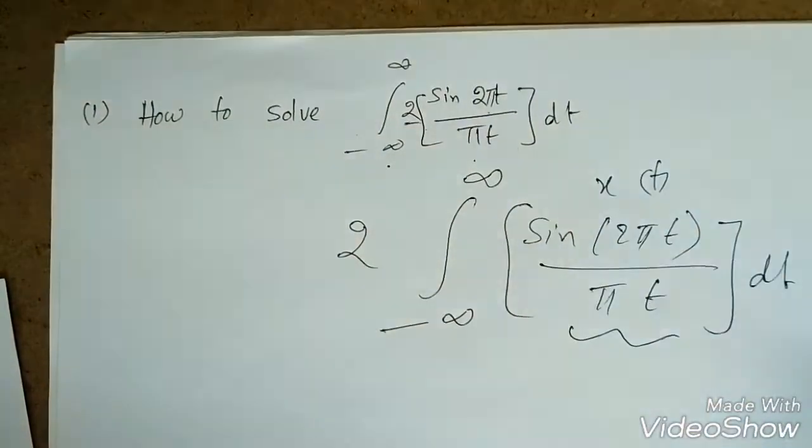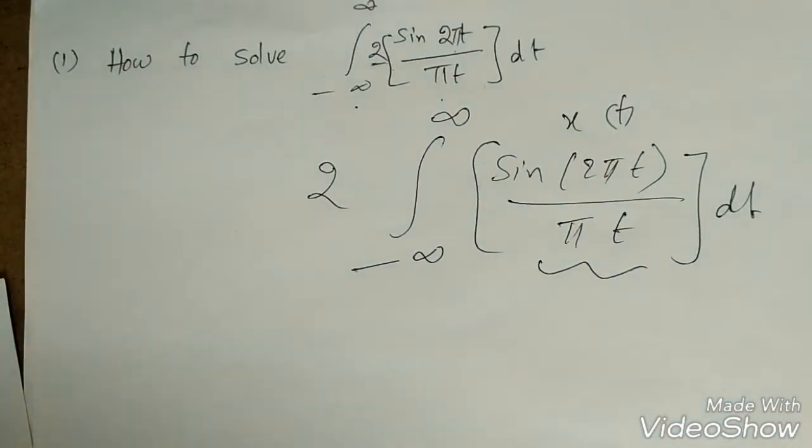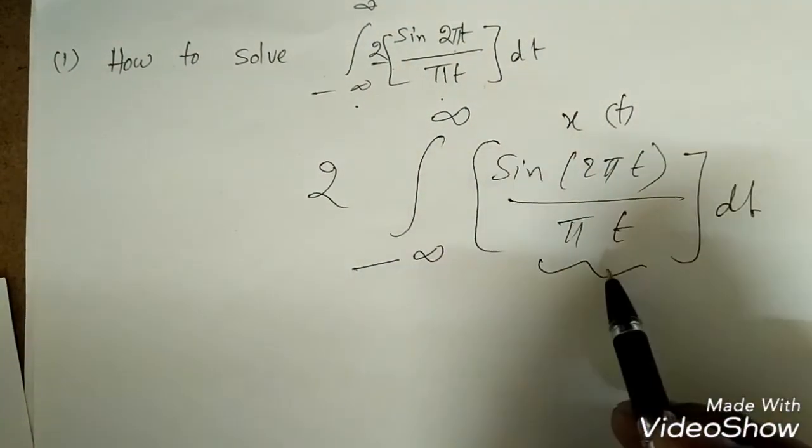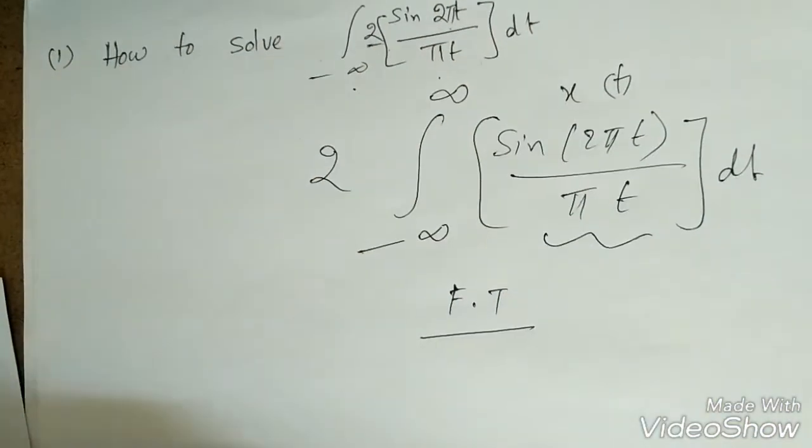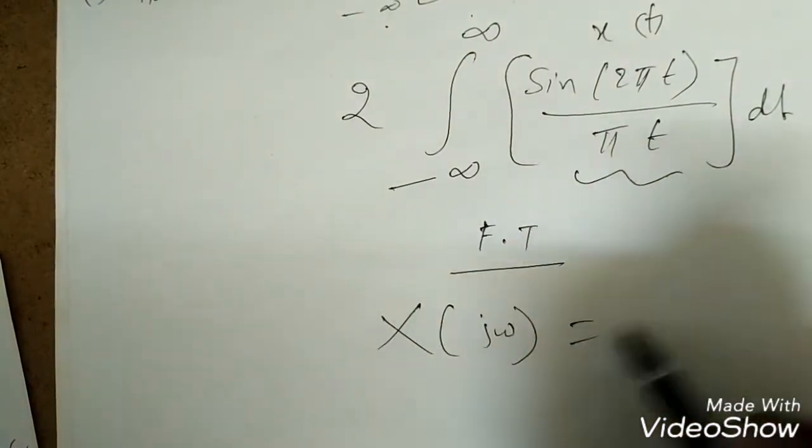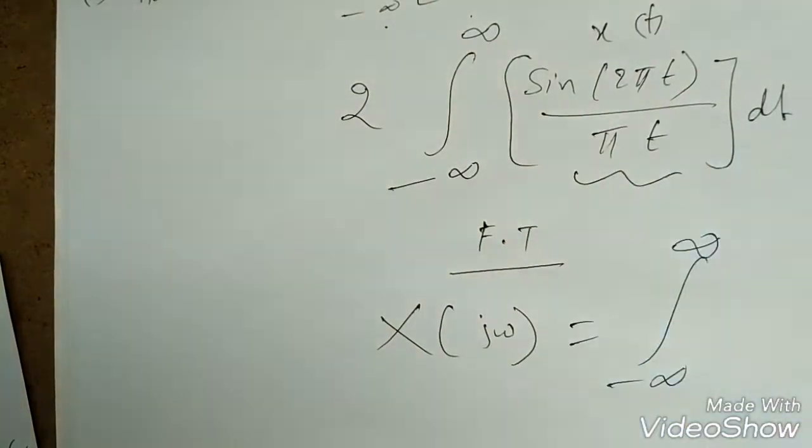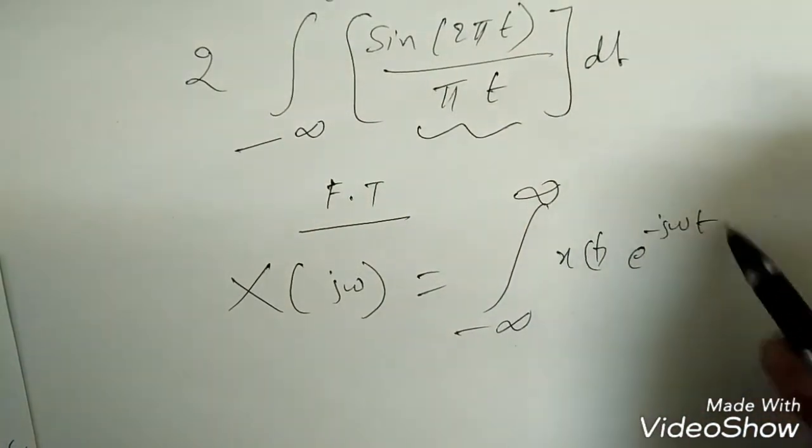We can go for the Fourier transform method. What is this Fourier transform? We know that x of jω is equal to the integral from minus infinity to infinity of x(t) times e to the power minus jωt dt.